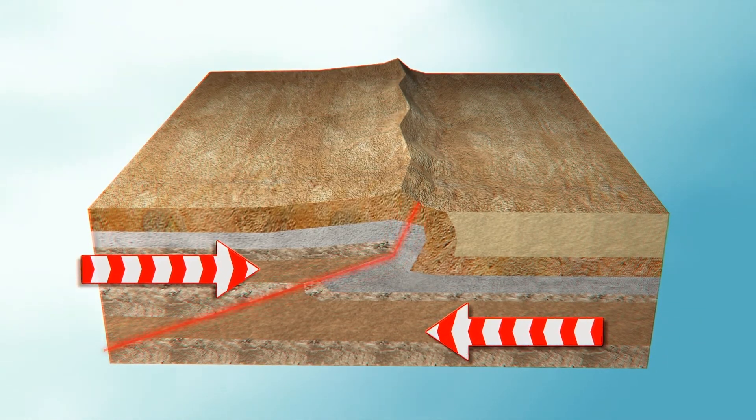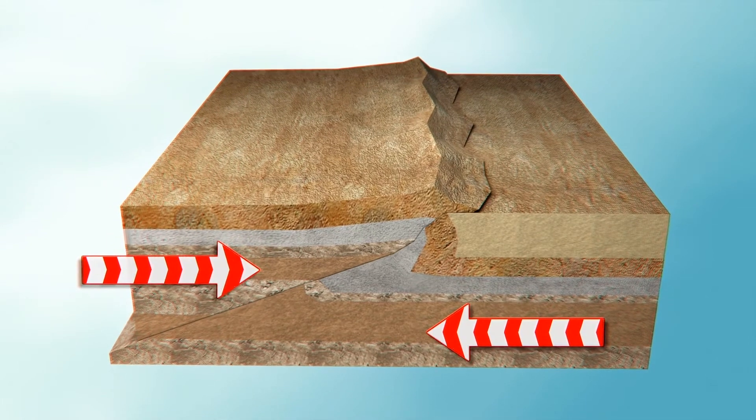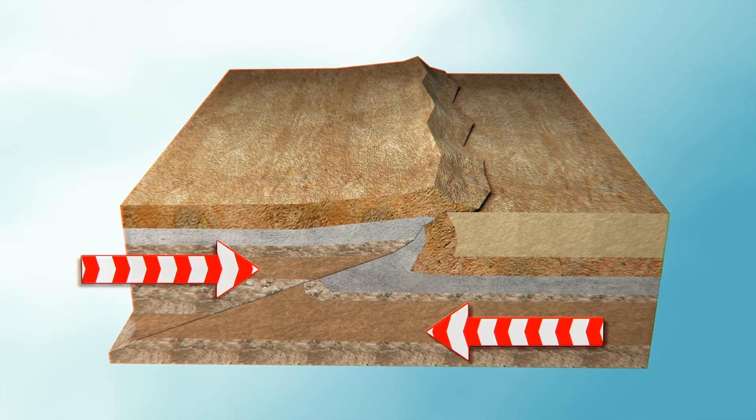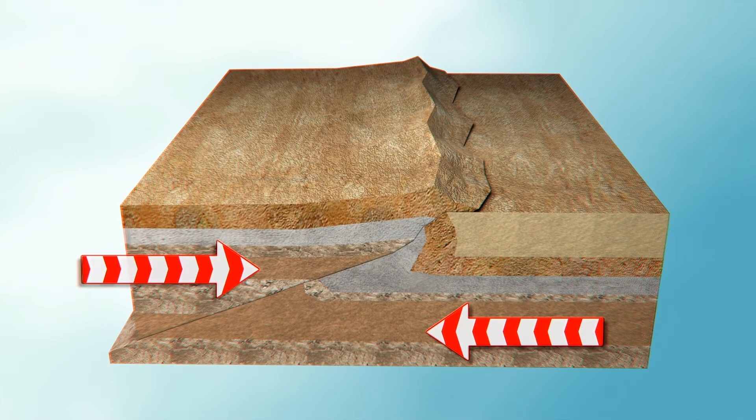In a news release, the researchers say their study is the first proof that massive erosion from earthquakes may trigger seismic activity, which is the reverse of what usually happens.